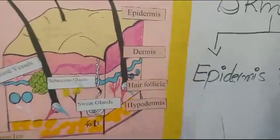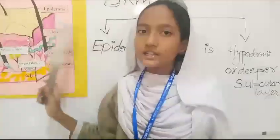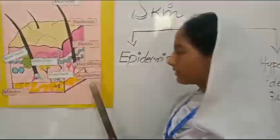Now I have to explain the layers of skin. The skin consists of three layers. First is called epidermis, second is dermis, and third is hypodermis.